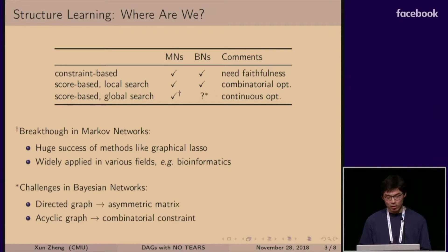So about ten years ago, a huge breakthrough happened in learning structure of Markov networks, led by methods like graphical lasso. And it has been hugely successful and widely applied in various fields like bioinformatics. So this method can be classified as score-based learning, but using global search, where you update all the graph parameters at once. So a natural question is whether you can do the same thing in Bayesian networks.